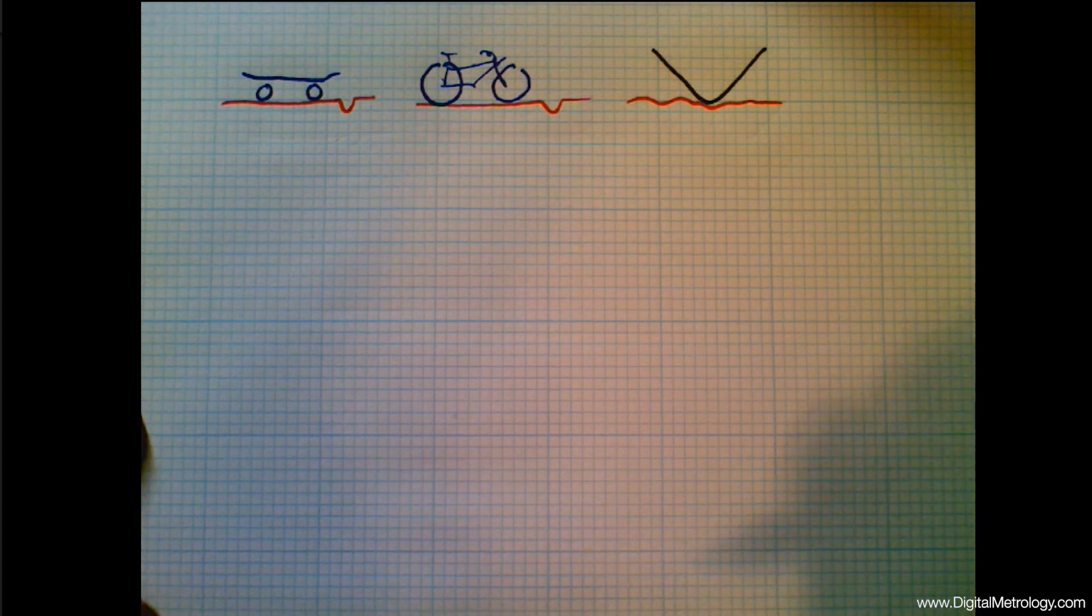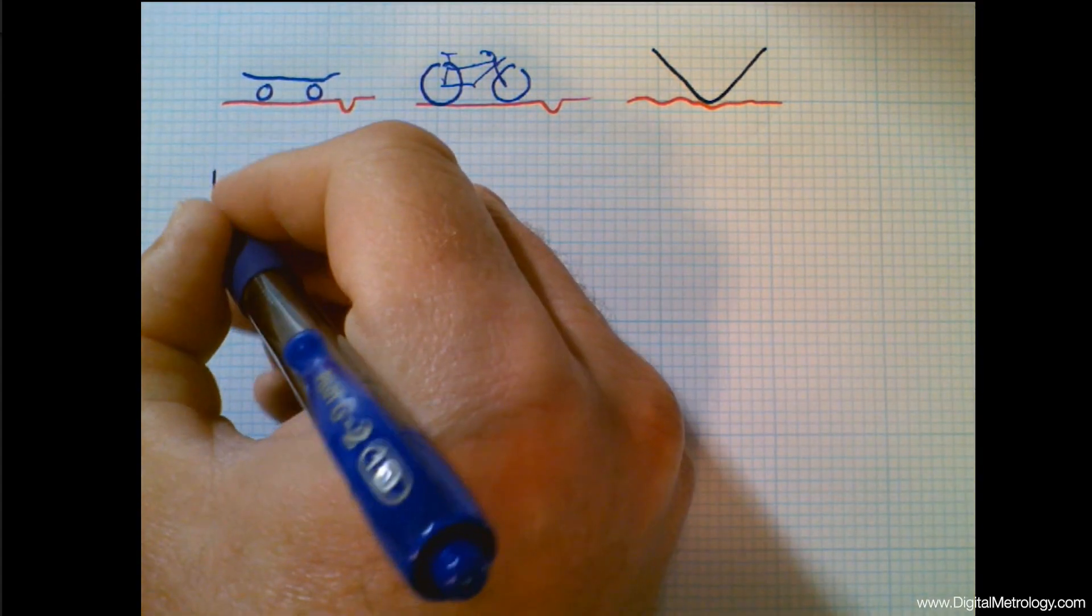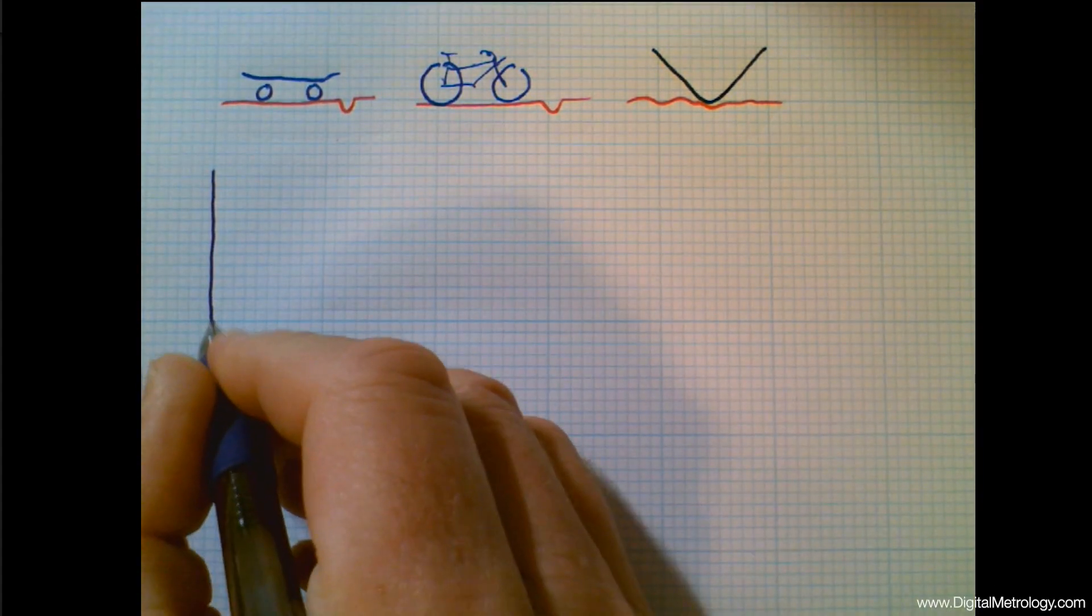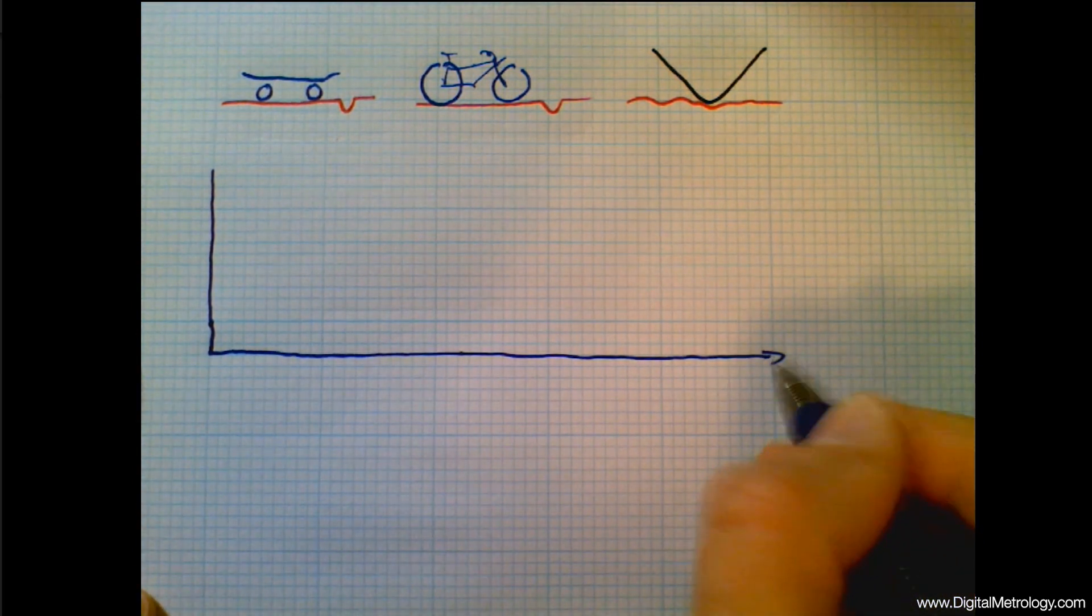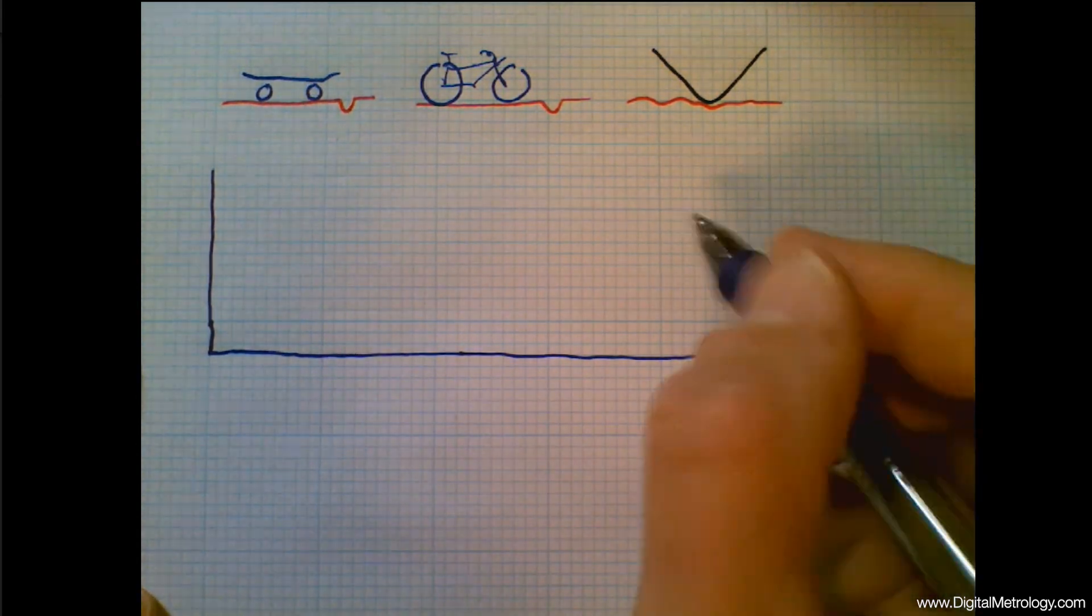But here's a problem. When we're measuring a surface, the selection of that radius can influence the results you're going to see. So let's unpack this a little bit with our favorite plot of wavelengths.